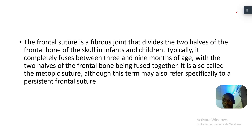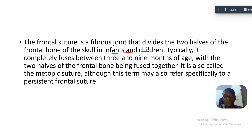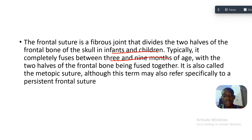It is a fibrous joint that divides the two halves of the frontal bone — that's in infants and children. That's to tell you it is not found in adults. Typically it completely fuses between 3 to 9 months of age.